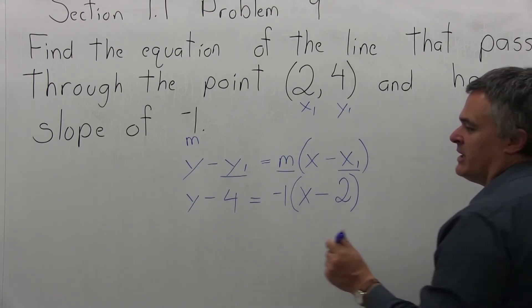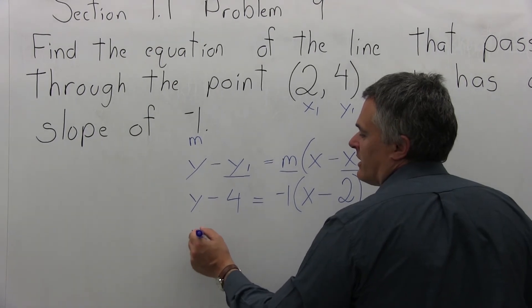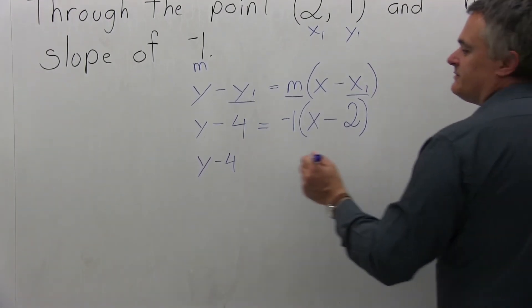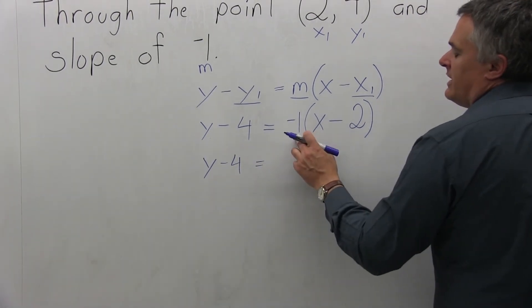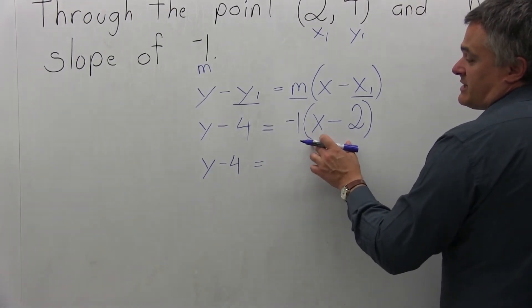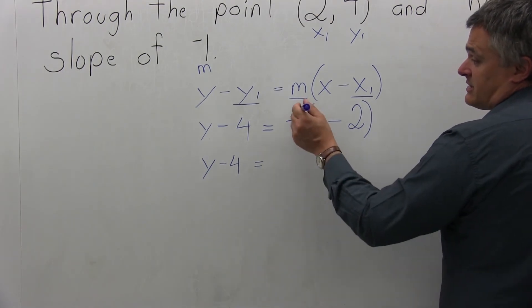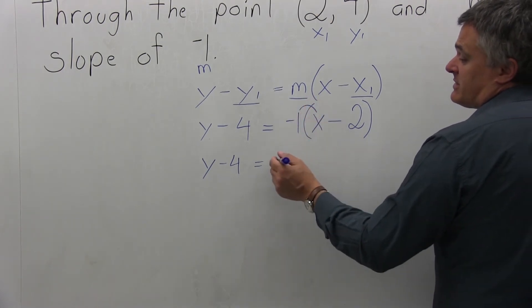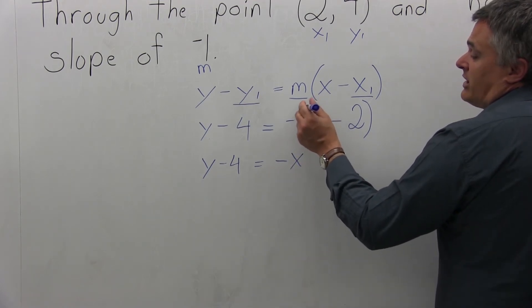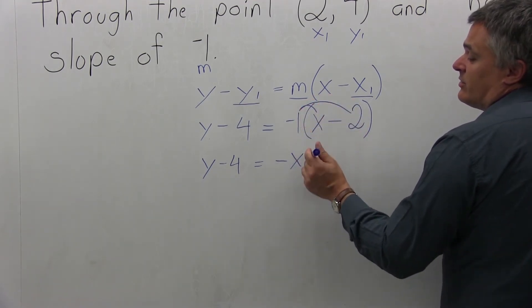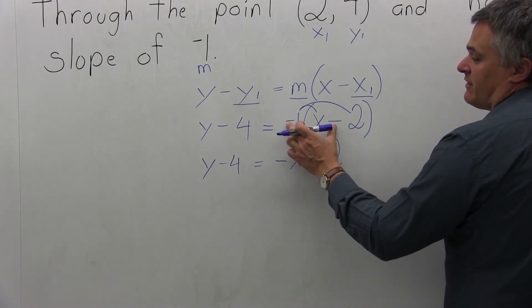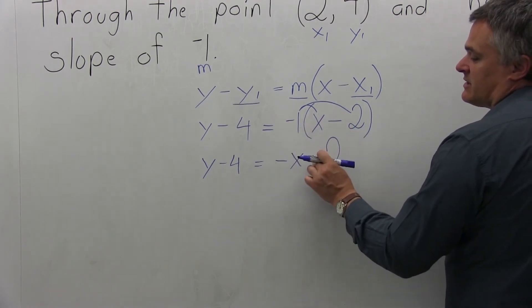So let me start by clearing the parentheses. So the y minus 4 on the left can stay for a minute. The negative 1 on the outside of the parentheses can get multiplied times each piece inside the parentheses. Negative 1 times x will be negative x. And negative 1 times negative 2 will be positive 2. Again, remember your rules of negatives. A negative times a negative is a positive.